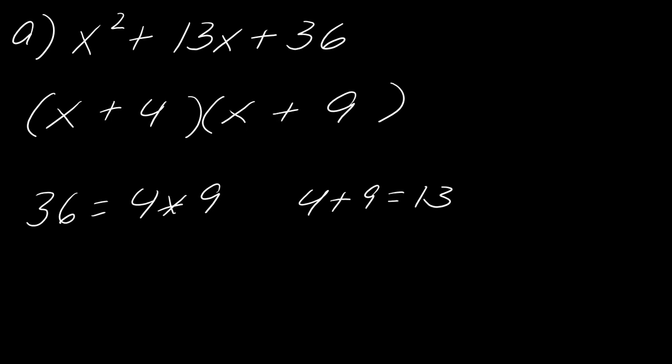You really want to just do a quick sanity check of this. I've got x times x, which is x squared. I've got 4x, 9x, and then 36. So that will definitely give me what I needed. This was a successful trial and error. So we'll keep going.